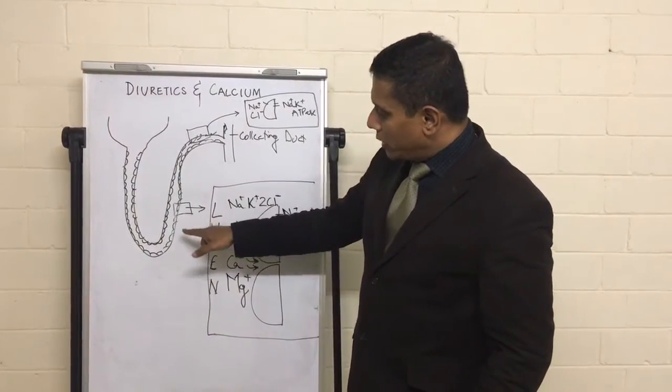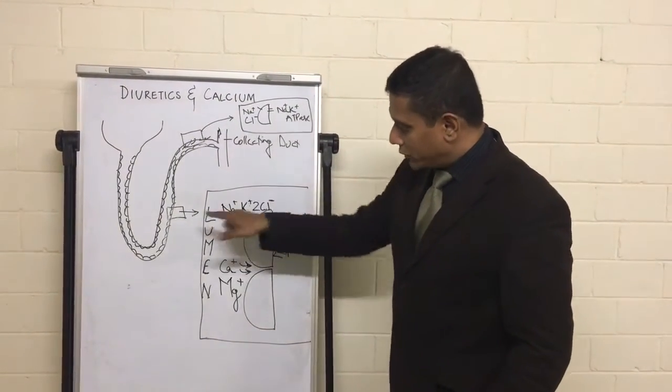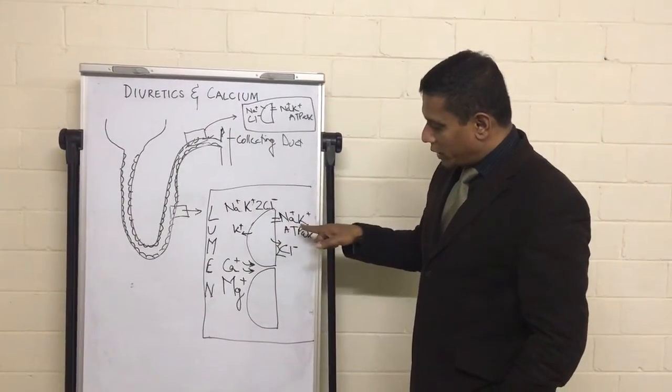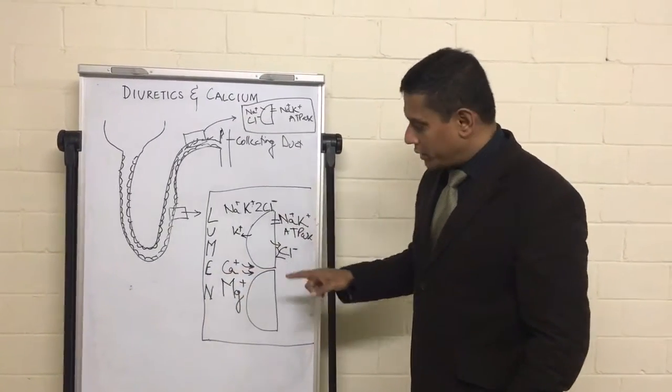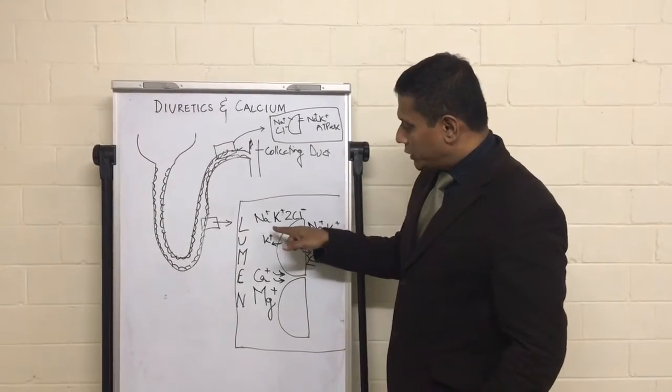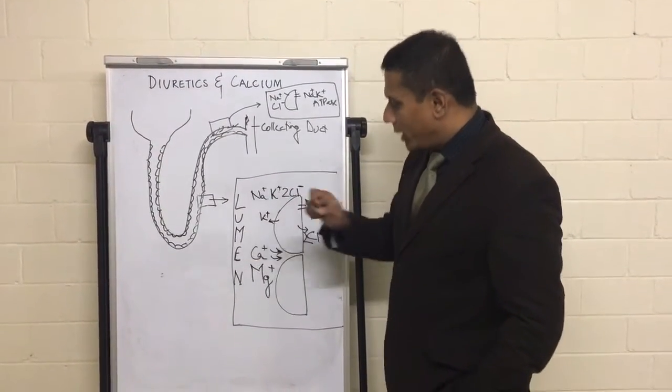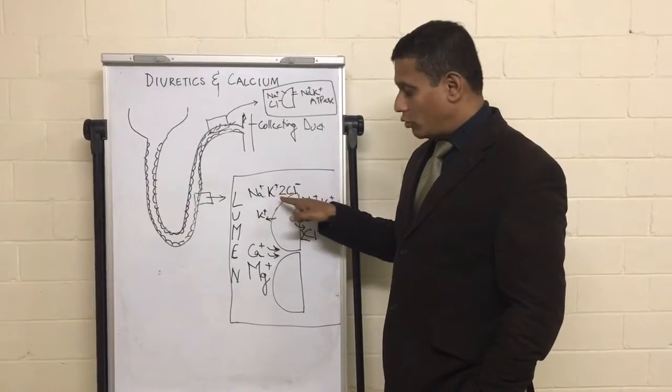Now if I come to the ascending limb of loop of Henle, where things like furosemide, the loop diuretics, act, let's pick up one of those cells. So I've got the sodium-potassium ATPase, which is constantly chucking out three sodium and bringing in two potassium. Hence, the cell is deficient for sodium, as we just discussed, which makes it easy for the cell to gain sodium from the lumen. And this sodium comes in the form of sodium-potassium-two chloride.